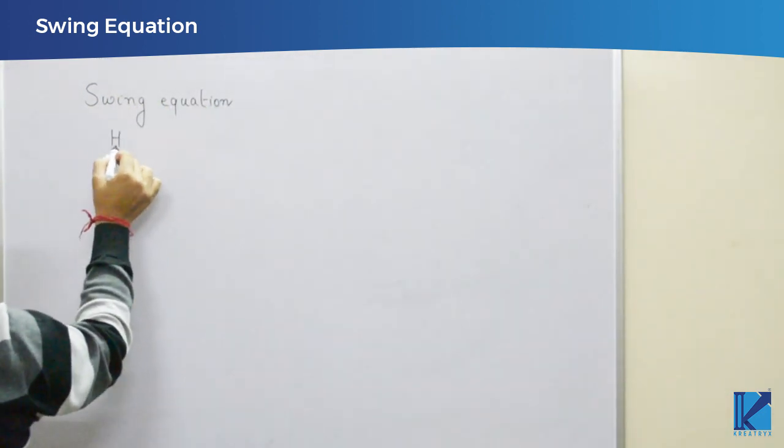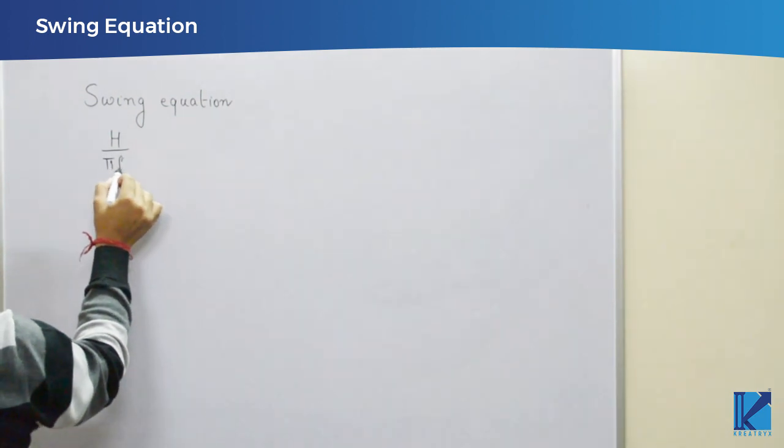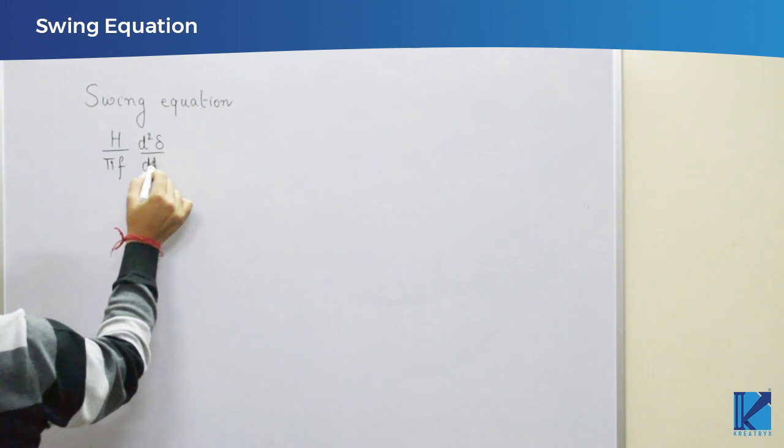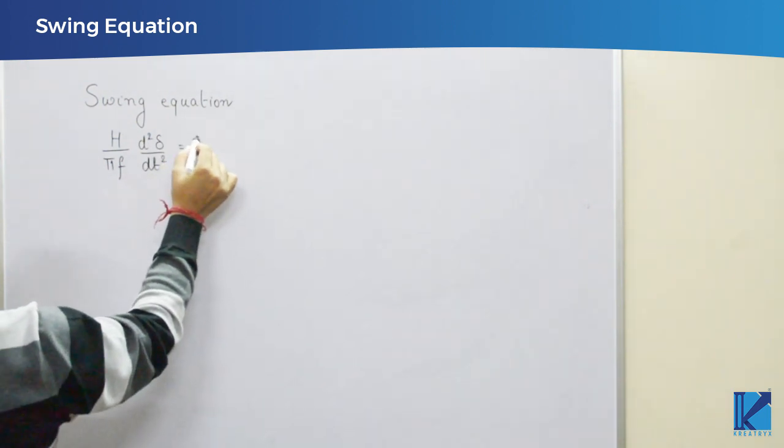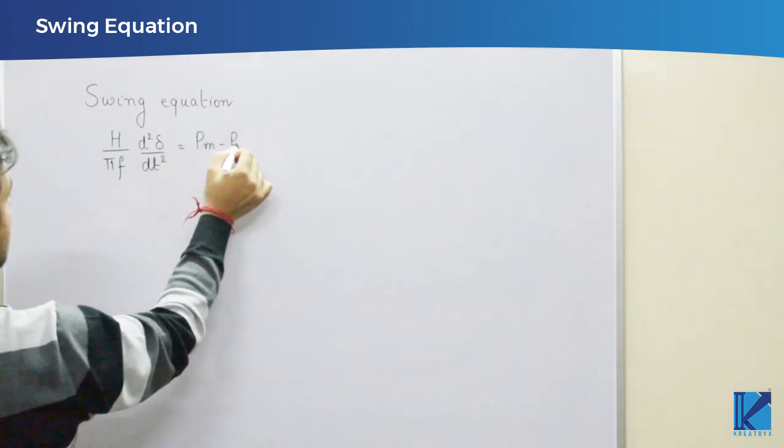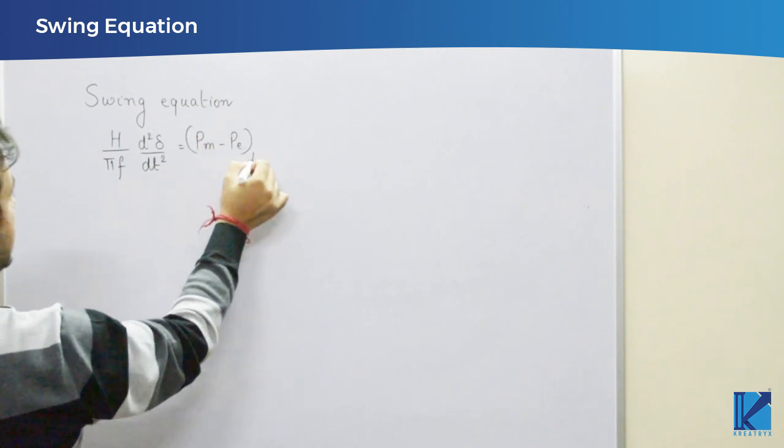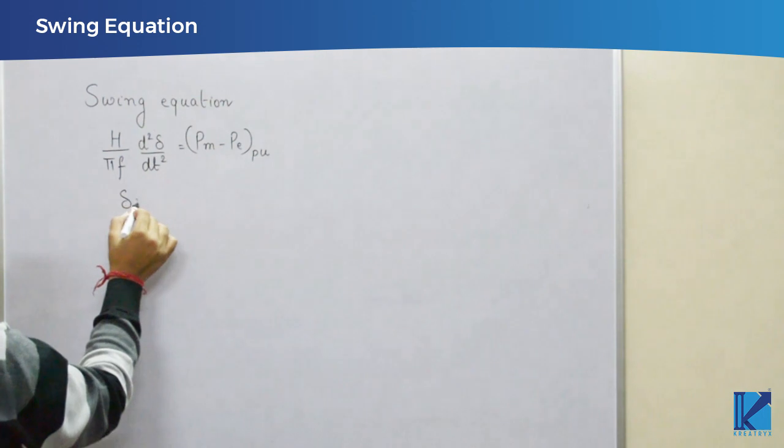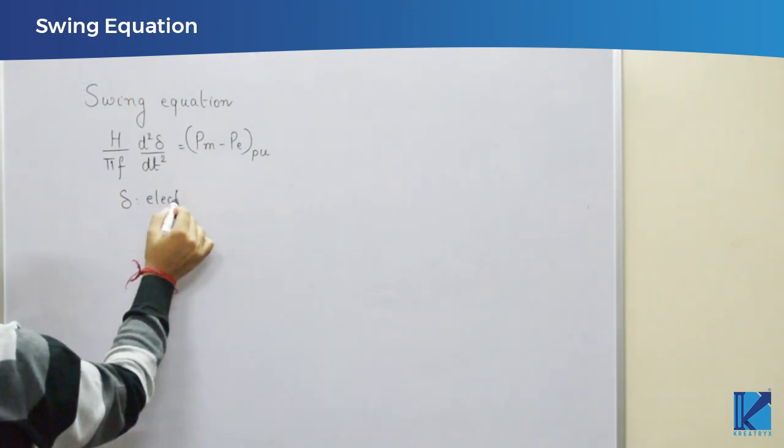If we write swing equation, there are two forms. H by pi f d square delta by dt square is Pm minus Pe. But these powers should be taken in per unit, and here delta is in electrical radian.